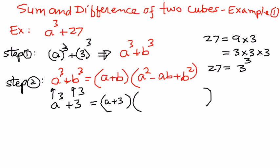The base term raised to the power of 2: a raised to the power of 2, minus the product of the first and second term: a times 3, plus the second term raised to the power of 2: 3 squared. So now it is just a matter of simplifying what we have in this set of parentheses.